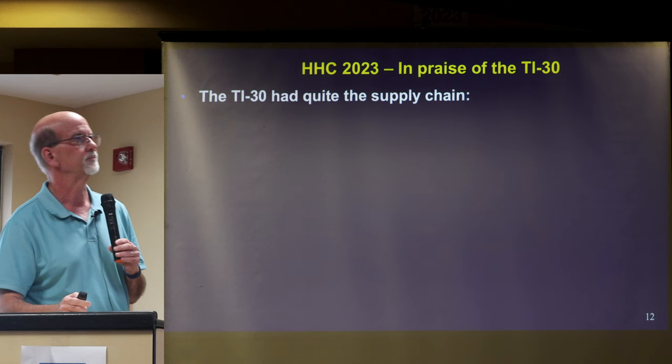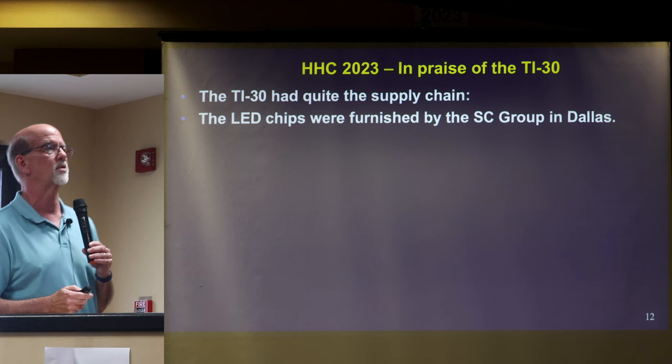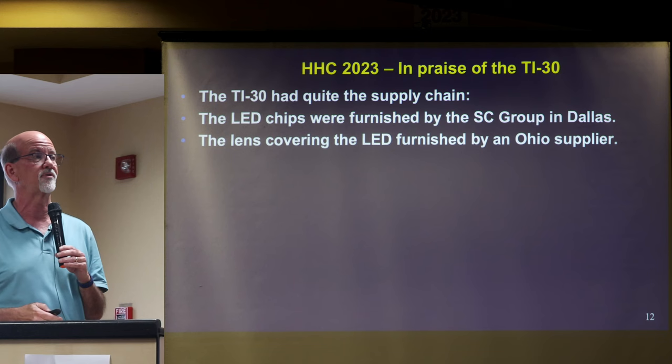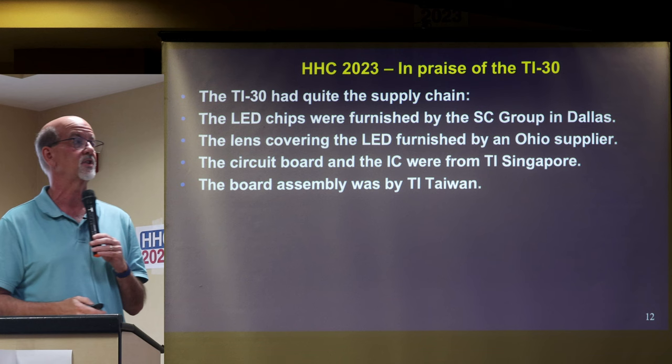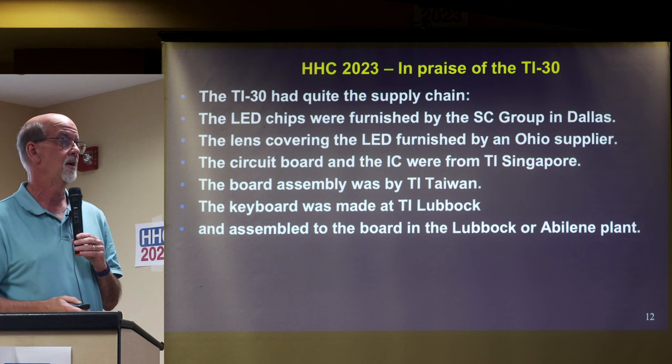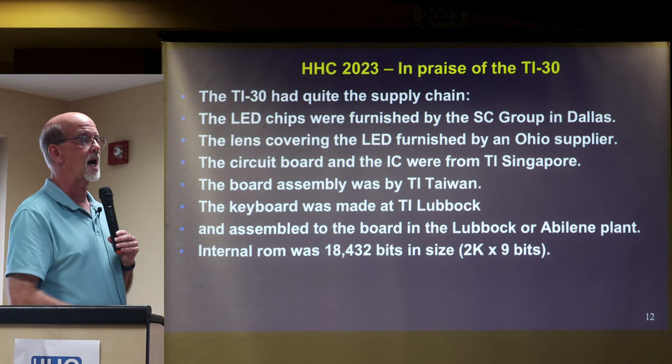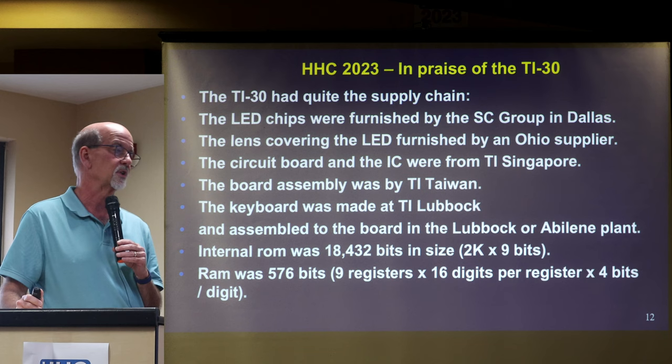It had quite the supply chain. The LED chips were furnished by the SC Group in Dallas. The lens covering the LED display was furnished by an Ohio supplier. The circuit board and the IC were from TI in Singapore. The board assembly was done by TI Taiwan. The keyboard was made down in Lubbock, one of the main TI plants, and it was assembled to the board in the Lubbock or Abilene plant. The internal ROM had 18,000-plus bits — 2K by 9 bits. RAM was 576 bits: 9 registers with 16 digits per register at 4 bits per digit.